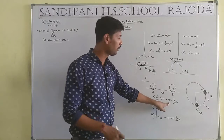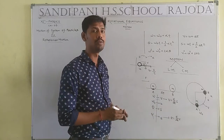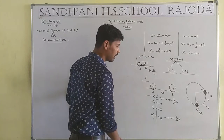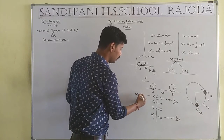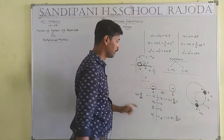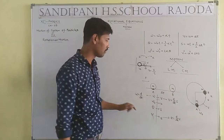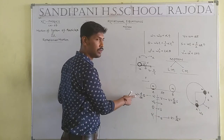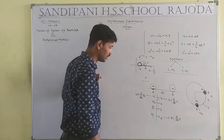Angular velocity means the rate of change in angular displacement. So, omega (ω) = dθ/dt. Here, S is replaced by theta (θ). That means angular velocity equals the rate of change in angular displacement.